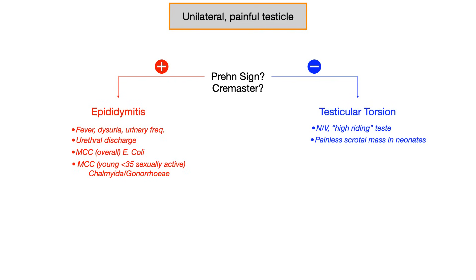If this presentation is torsion in neonates — that's important because you're probably not going to see a testicular tumor in a neonate — a lot of people see scrotal mass and freak out and pick the tumor. But if this is the presentation in a neonate, it can still be testicular torsion. The Prehn's sign and the cremaster reflex is what you use to figure out what you're dealing with.